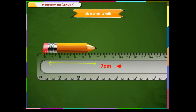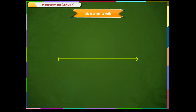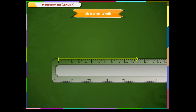We can measure line segments in the same way. Let us consider a line segment given on the screen. To measure its length, we place the ruler alongside the line segment as shown. One end of the line segment should coincide with the zero mark of the ruler. Now read where the other end falls — it falls on the 12 cm mark. So the length of this line segment is 12 cm.